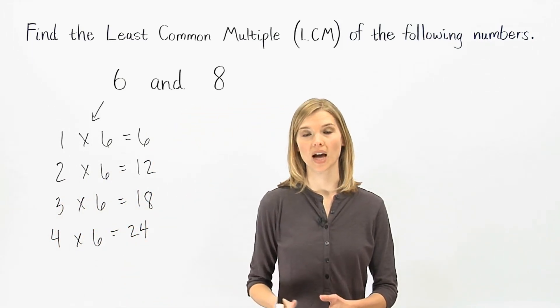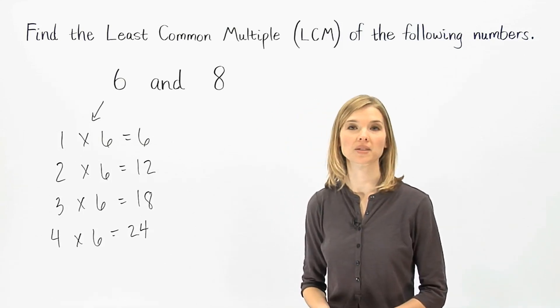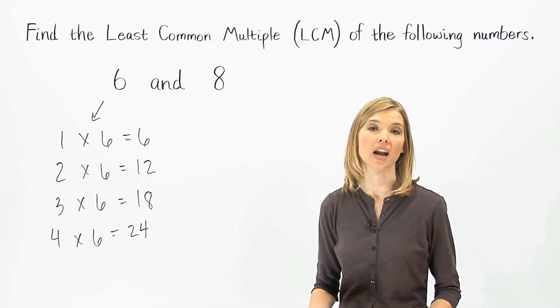Notice that we skipped 0 times 6, because 0 times 6 is 0, and the least common multiple cannot be 0.